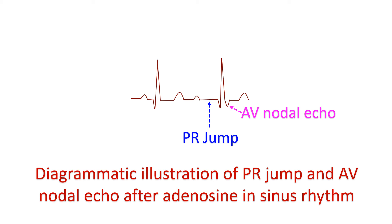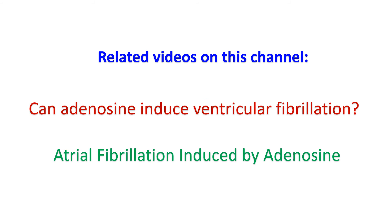A positive adenosine test identified by a PR jump had a specificity of 94% and a positive predictive value of 96% in one study. Please have a look at two related videos on this channel: one on whether adenosine can induce ventricular fibrillation, and another on atrial fibrillation induced by adenosine.